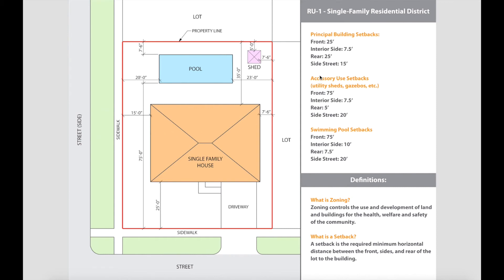Now let's look at accessory use setbacks, which apply to utility sheds, gazebos, and other small structures. The setback requirements are: front — a minimum distance of 75 feet. From the property line to the pool area there's 75 feet, so we're good. Interior side: 7.5 feet. Rear: 5 feet — good. Side street: the dimension here is more than the 20-foot requirement.